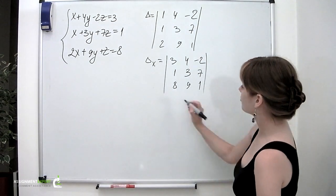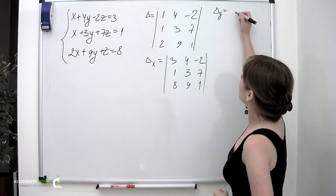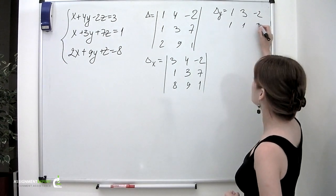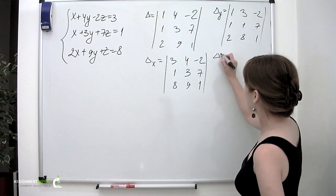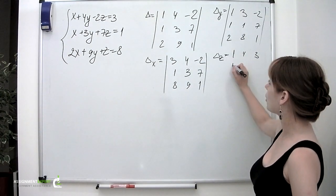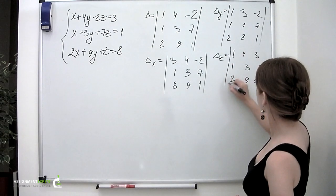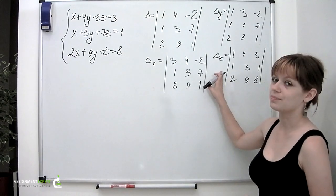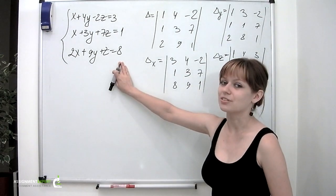We can similarly find delta_y and delta_z. Delta_y is formed by replacing the second column of delta with the constants: entries are 1, 3, minus 2; 1, 1, 7; and 2, 8, 1. Delta_z is formed by replacing the third column: entries are 1, 4, 3; 1, 3, 1; and 2, 9, 8. We replaced the second and third columns of delta with the column of constants from the right side of our system.